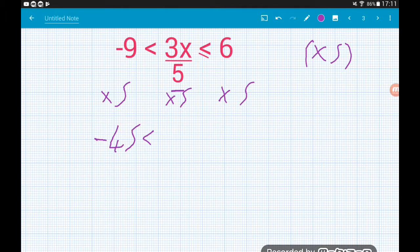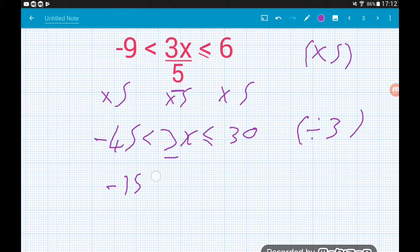Now minus 9 times 5 will give us minus 45. In the middle, the 5 on the bottom of the fraction cancels. That's the whole point. And then on the right, we've got 6 times 5, which is 30. So now we know that 3x is strictly greater than minus 45 but is less than or equal to 30. So now we need to get rid of the 3. So if we divide 3 by 3, then minus 45 divided by 3 is minus 15. 3x divided by 3 is a single x. That's the whole point.